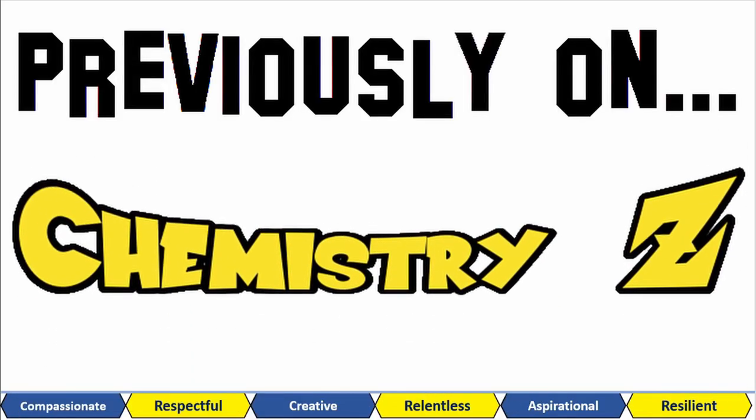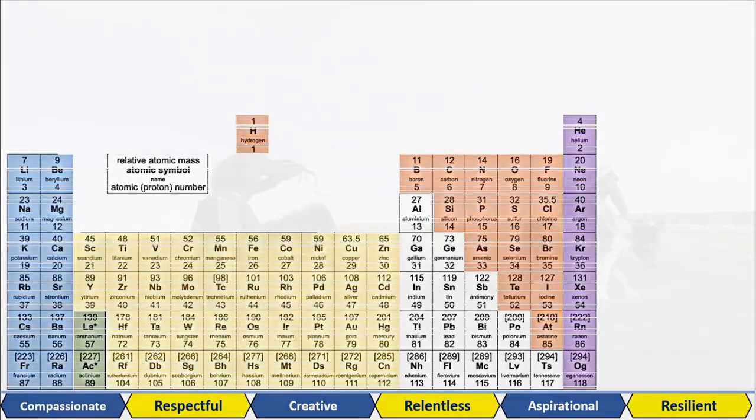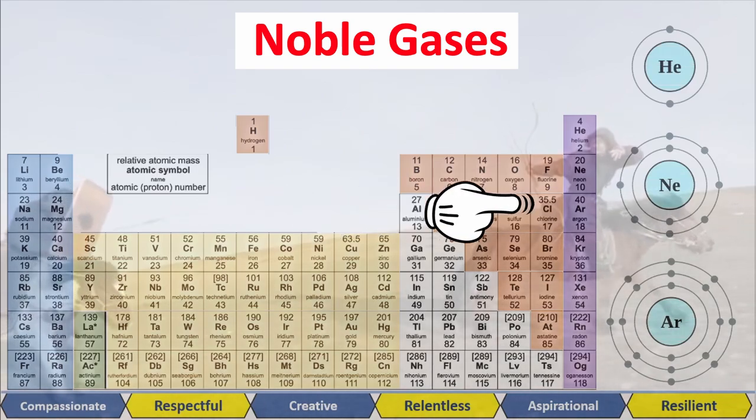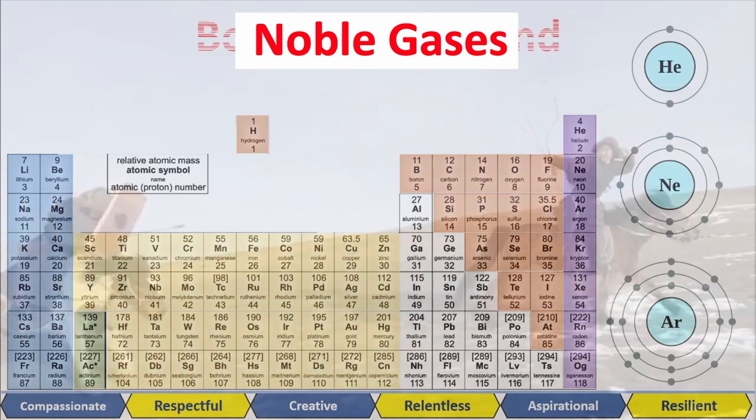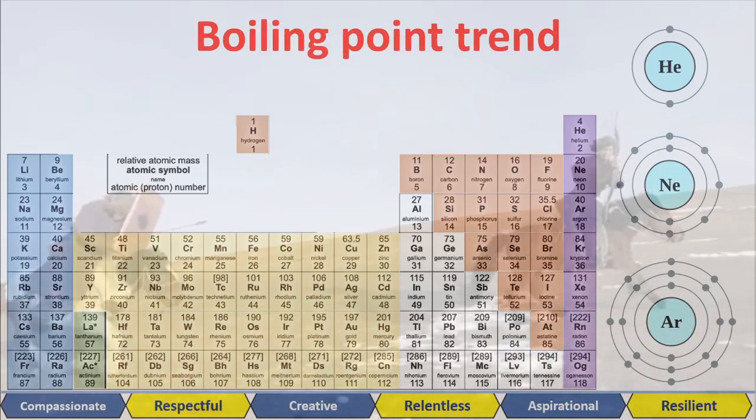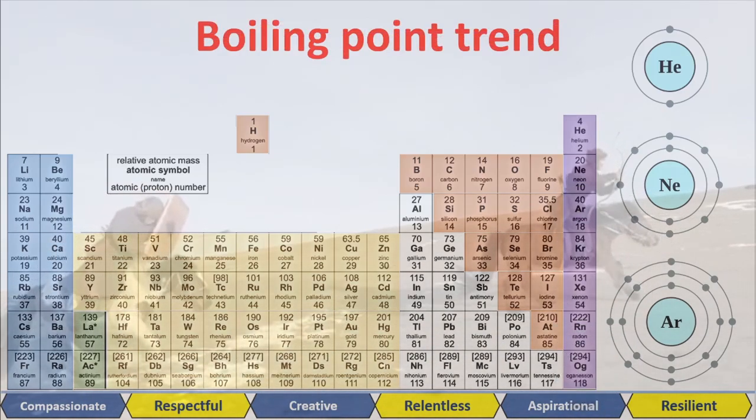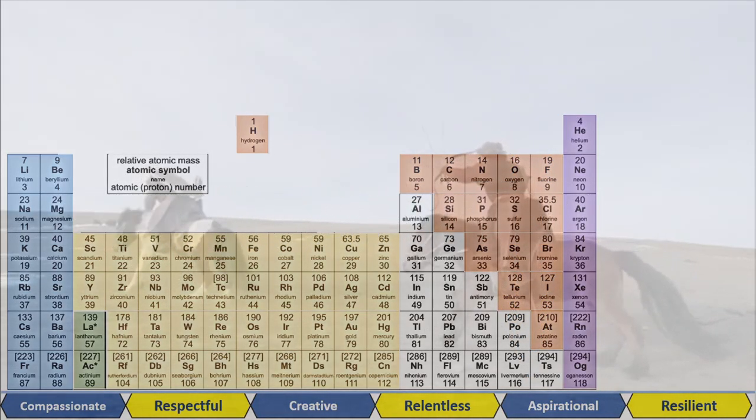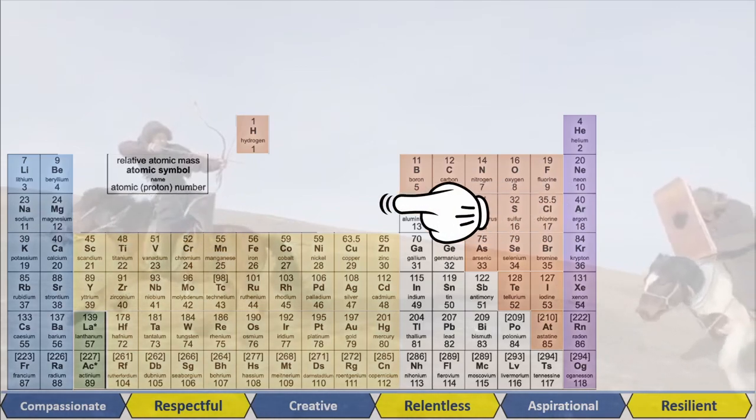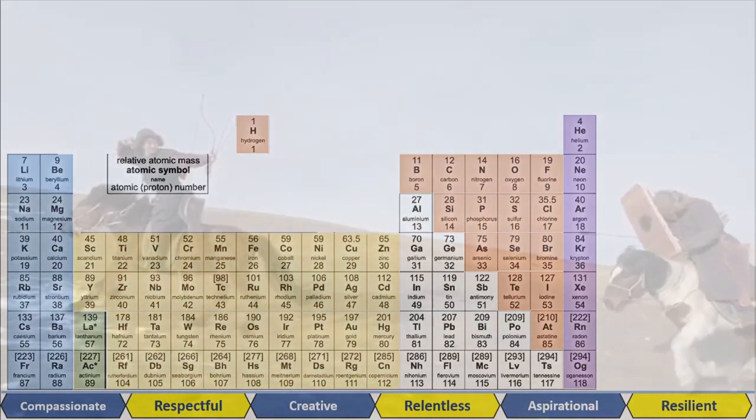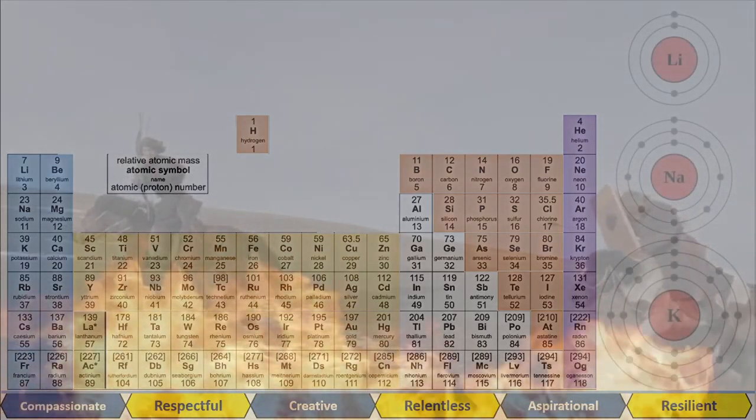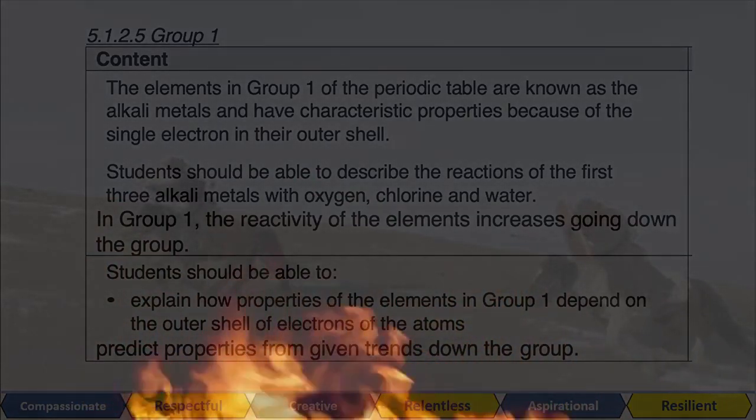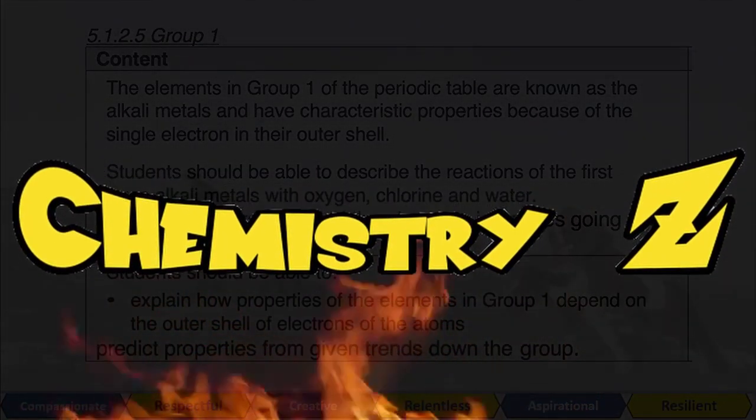Previously on Chemistry Z, our heroes journeyed to the mountains of Group Zero to meet the ancient noble gases. They finally answered that ancient question of whether boiling point increases as you move up the group or down the group. And now with this knowledge they journey to the other side of the periodic table to meet the explosive alkaline mountains of Group One. Will our heroes be able to pattern the word and symbol equation lurking in the mist? Find out in today's exciting episode of Chemistry Z.